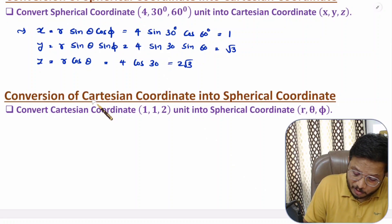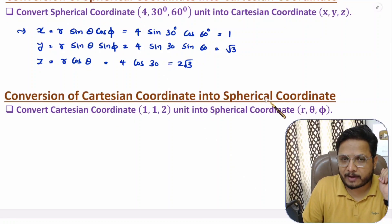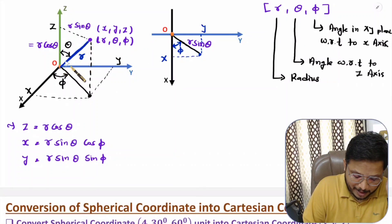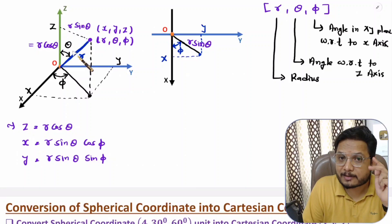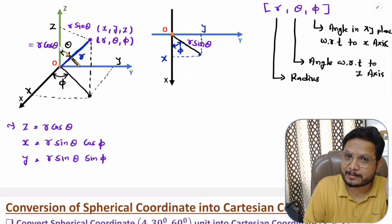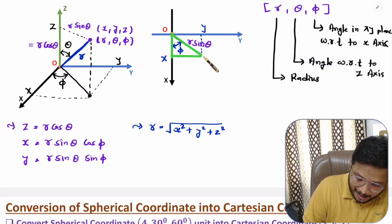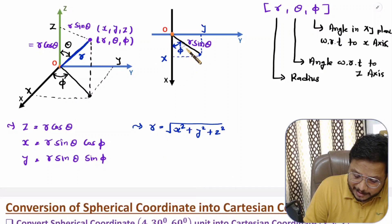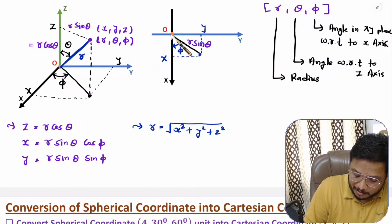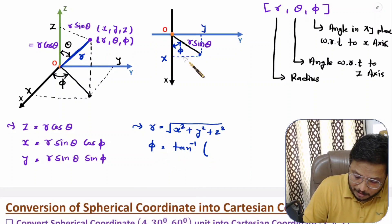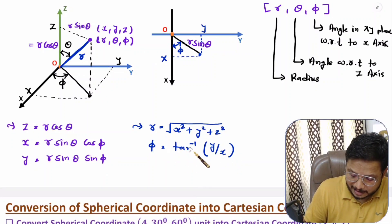Now we need the conversion of Cartesian coordinates into spherical coordinates. R is the radius, and that radius is the square root of X squared plus Y squared plus Z squared. For angle phi: from the triangle in the XY plane, the angle phi is tan inverse of opposite over adjacent, where opposite is Y and adjacent is X. So phi equals tan⁻¹(Y/X).